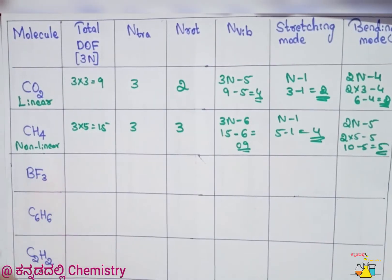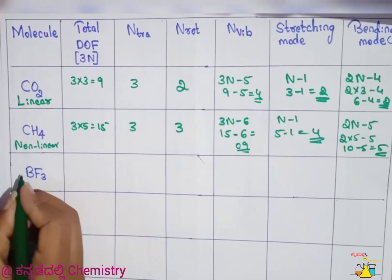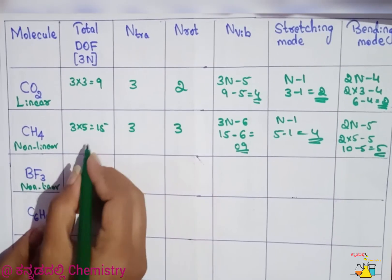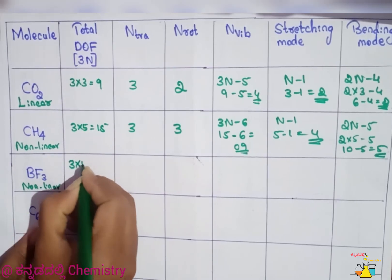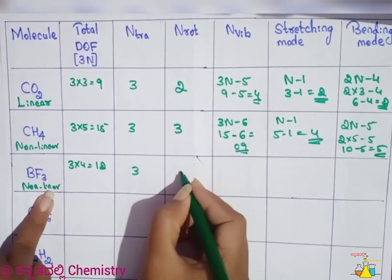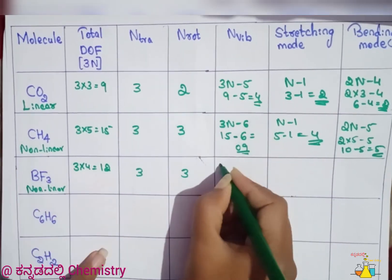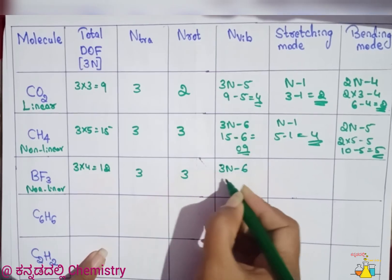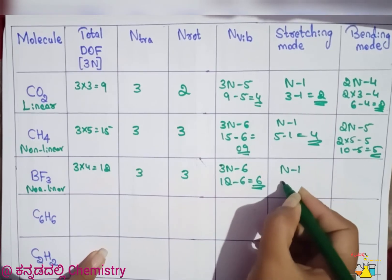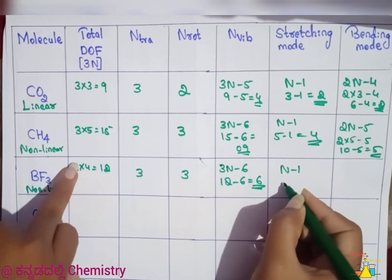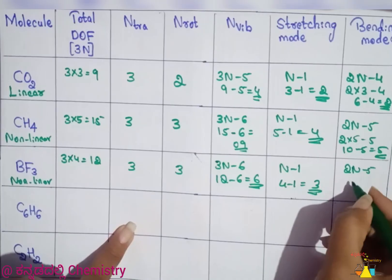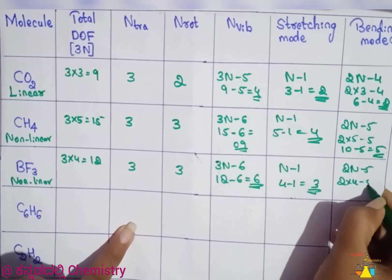Example: BF₃ — trigonal planar, so non-linear. n = 3+1 = 4, total = 3×4 = 12. Translational = 3. Rotational (non-linear) = 3. Vibrational = 3n−6 = 12−6 = 6. Stretching = n−1 = 4−1 = 3. Bending (non-linear) = 2n−5 = 2×4−5 = 8−5 = 3.